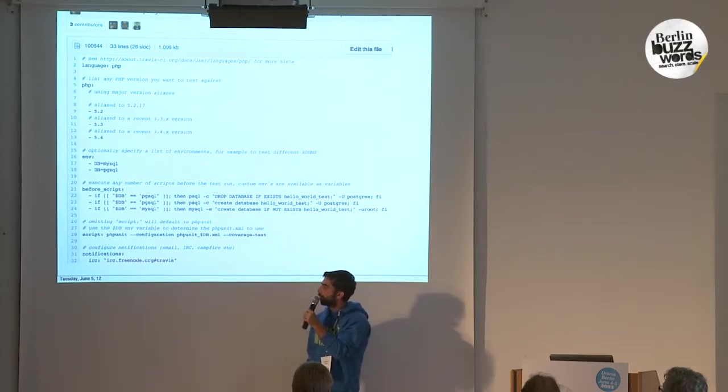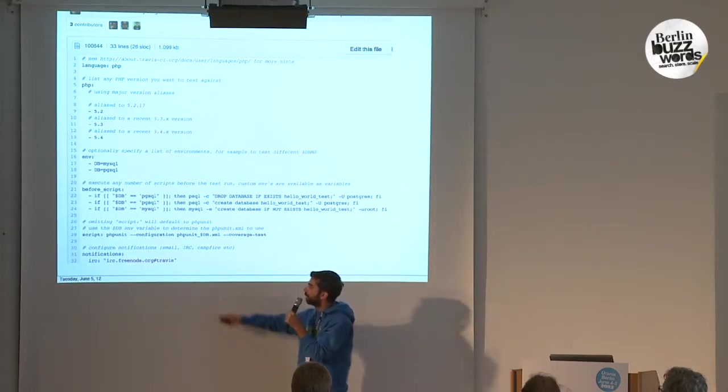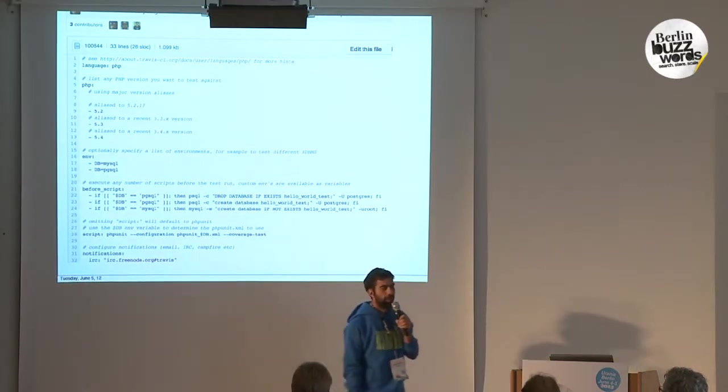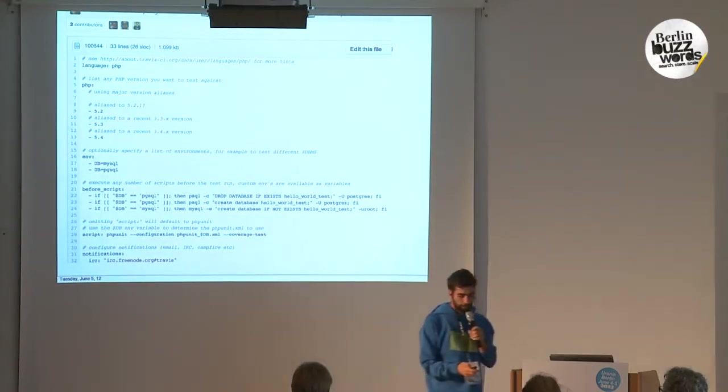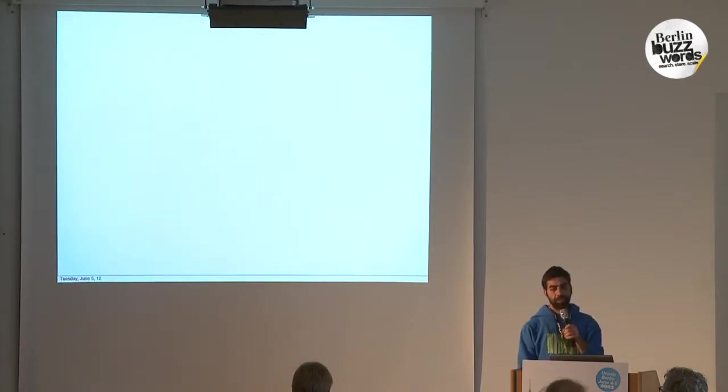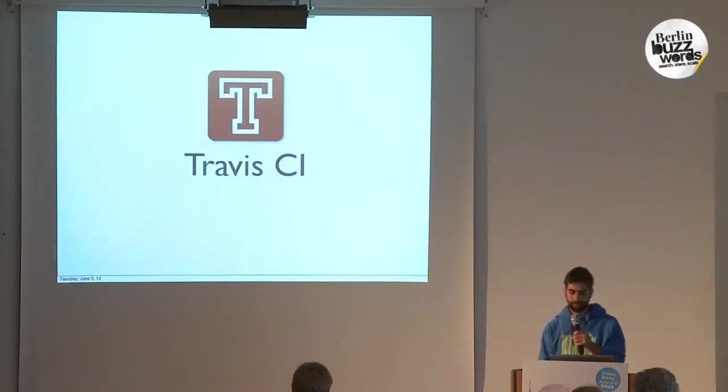The script line is something you can optionally customize for each language. We have a default for PHP that will be running PHPUnit, for Java JUnit, et cetera. But you can customize that — in this case, we're using a custom PHPUnit XML file for each of the databases. Then we're adding code coverage. And again, notifications: email, Campfire, whatever. So that's definitely easier than setting up Jenkins.